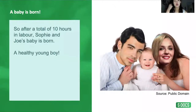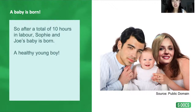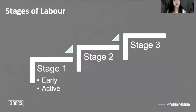After 10 hours in total, Sophie and Joe's baby is born — a healthy young boy. Ten hours might seem long but is quite normal for a primigravida, first-time mother. To recap: we've gone through stage one and stage two, but now that the baby is born, things aren't over yet — we have stage three of labor.